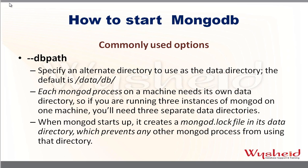If you want to use an alternative directory, you have to create that directory first and then specify that path as an input for the --dbpath option. For example: 'mongod --dbpath /user/row1' — so 'user1' will become the data directory.